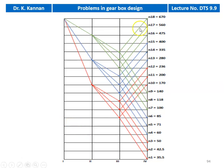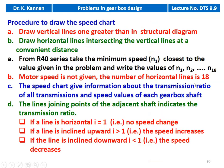The same structural diagram can be used for preparing the speed chart or ray diagram. When the motor speed is given, draw one additional vertical line; in this example, the motor speed is not given, so no additional vertical line is required. Draw horizontal lines intersecting vertical lines at convenient distances. Take the minimum speed n1 closest to the given value from the R40 series and write values n1 to n18. The speed chart gives information about the transmission ratio of all transmissions and the speed value of each gearbox shaft.